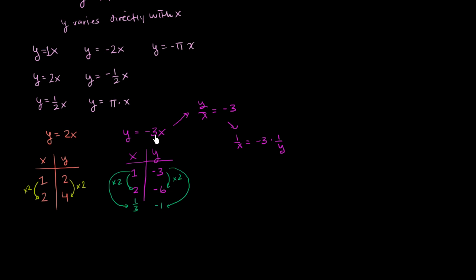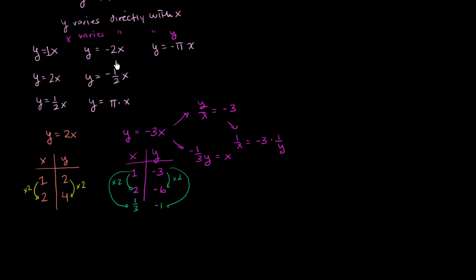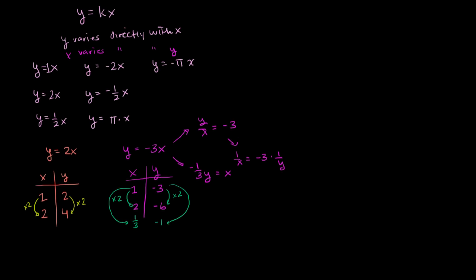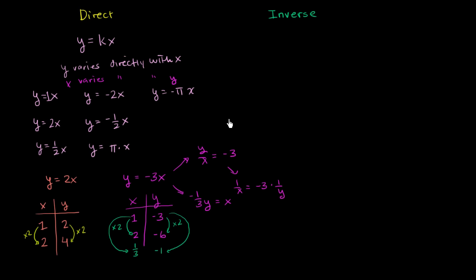You could also divide both sides by -3 and get -⅓y = x. This is an interesting case: x varies directly with y. In general, if y varies directly with x, then x varies directly with y as well — it won't be the same constant (it'll be the inverse), but they're still varying directly. With that said, let's explore inverse variation.